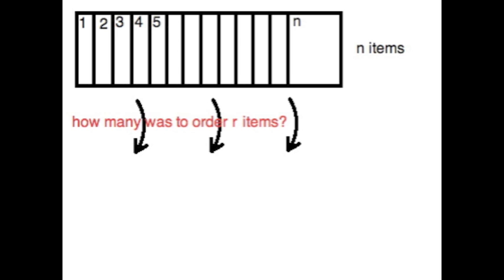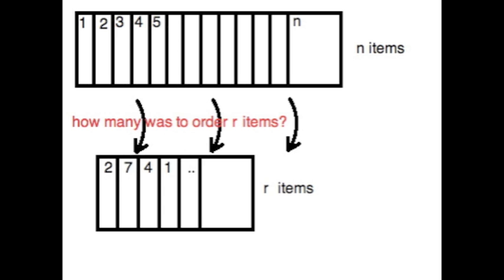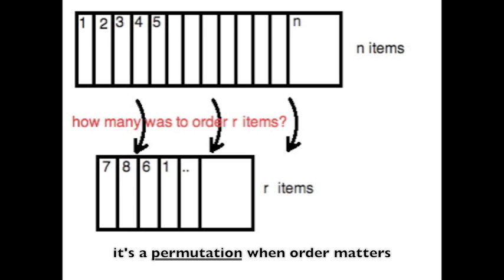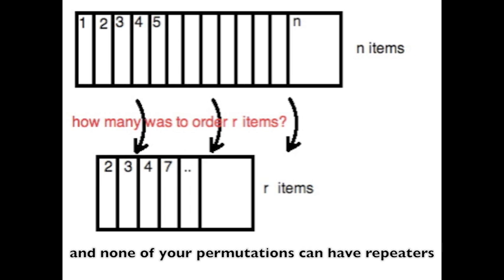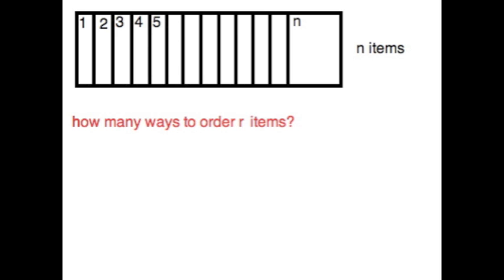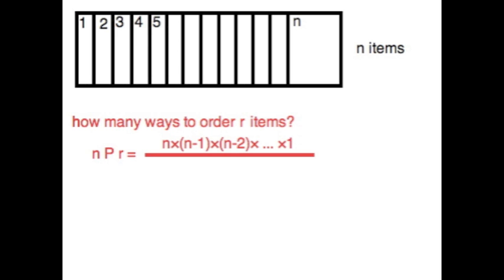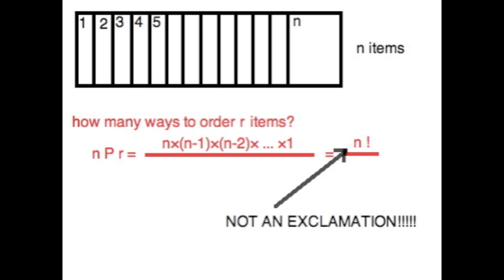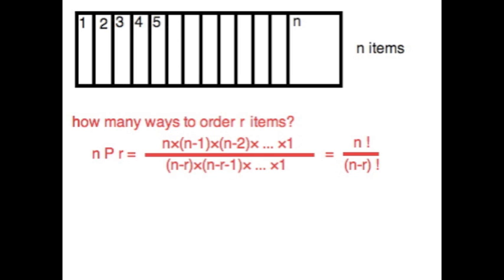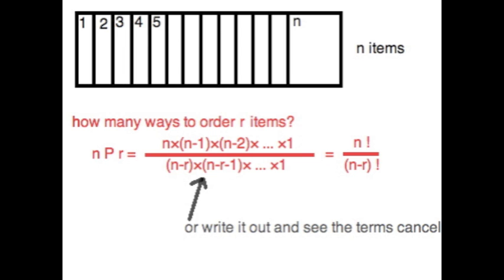You arrange r things from a set of n, and that's a permutation — it's when the order of things matters. A straightforward calculation: multiply n down to one, or n factorial, divided by n minus r factorial. You'll have some cancellation.